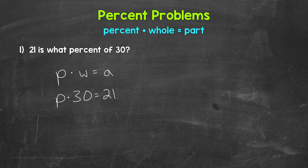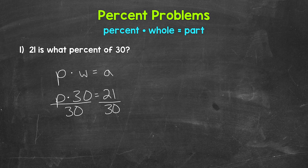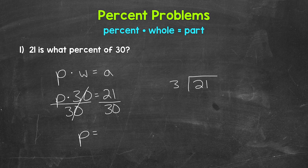Now we need to solve this equation, so we need to isolate the variable P. P is being multiplied by 30, so we need to use the inverse operation — division. We divide the left side of the equation by 30, and whatever we do to one side of an equation we must do to the other, so divide the right side by 30 as well. The 30s on the left cancel out, P is now isolated, and we have P equals 21 over 30, which is 21 divided by 30. We can convert this to a percent.